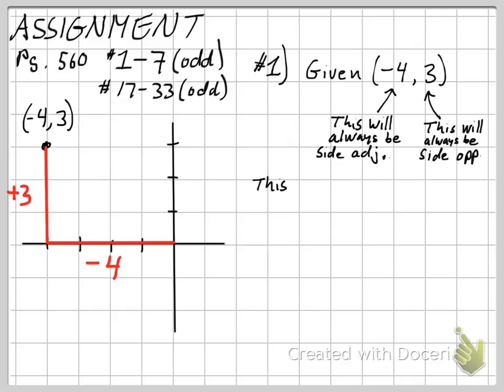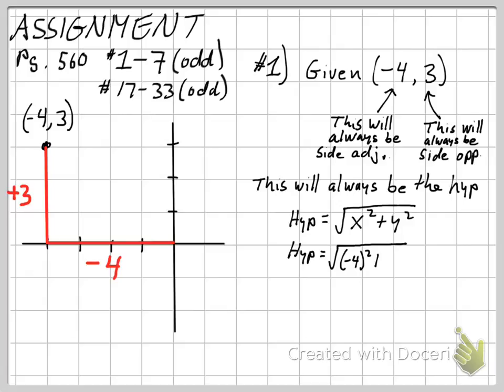The side adjacent will be our x-coordinate. Side opposite is our y-coordinate. And our hypotenuse is always going to be the x-coordinate squared side adjacent, plus the y-coordinate squared side opposite.